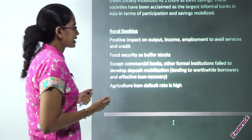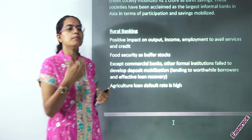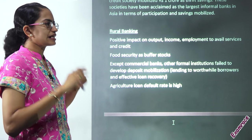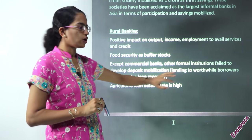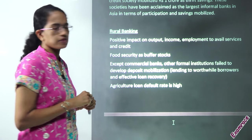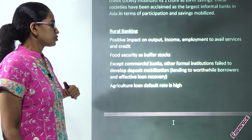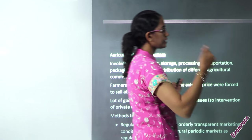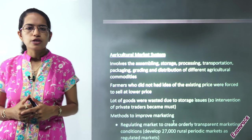Then you have rural banking. A good banking system would have a positive impact on income, employment, and output, and there would be better services in the rural area — ultimately the infrastructure would get stronger. Food security could act as buffer stocks. All other formal institutions failed to develop deposit mobilization except the commercial banks in the rural areas. The default rate of loans was high, so the idea was to bring down the loan rate in rural areas, providing cheaper loans to farmers.